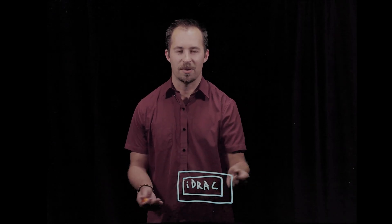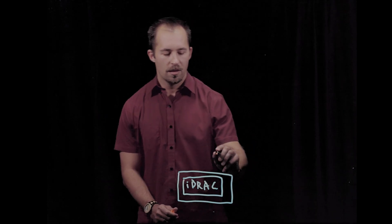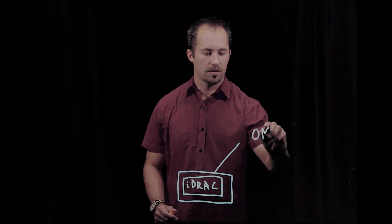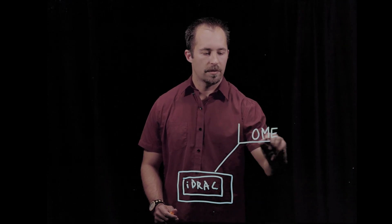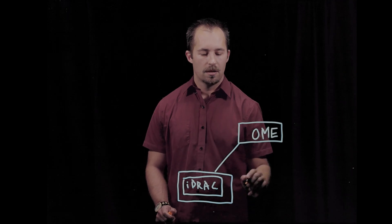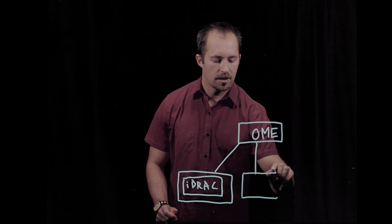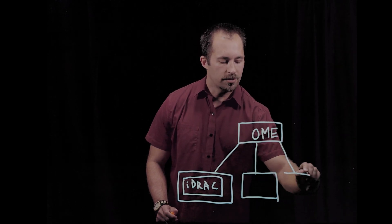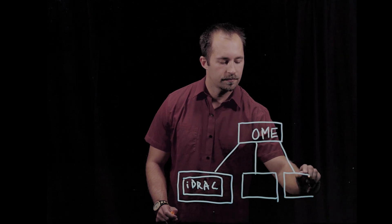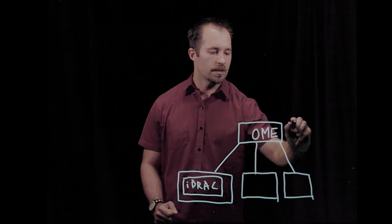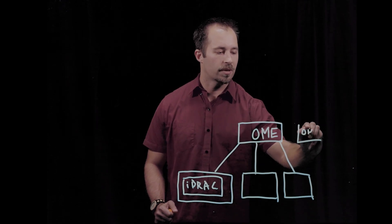I drew another box to represent the PowerEdge server. Servers then connect into OpenManage Enterprise within customers' on-prem locations and can connect up to 8,000 different PowerEdge servers for each OME instance. This exists all on-prem and users could install and set up even more OpenManage Enterprise instances where they need them or at different locations.